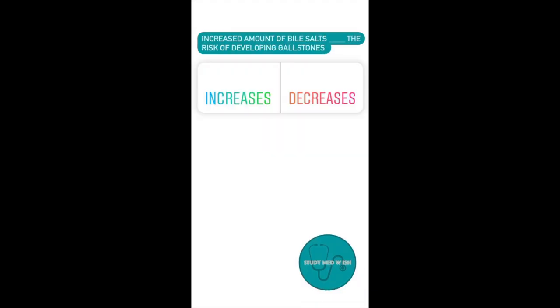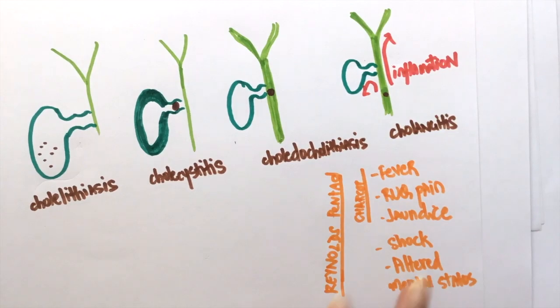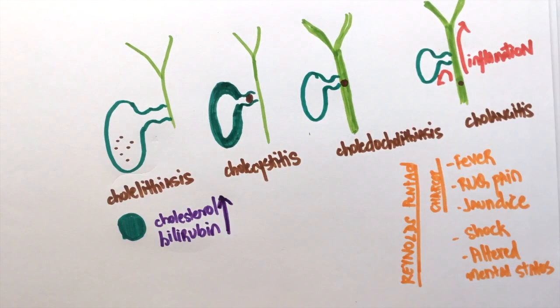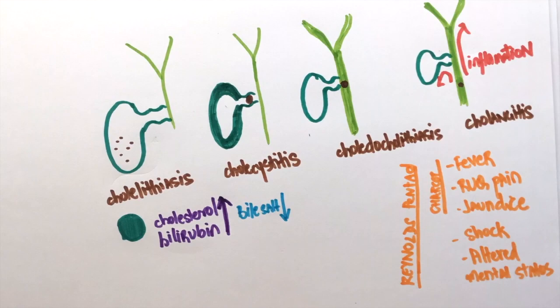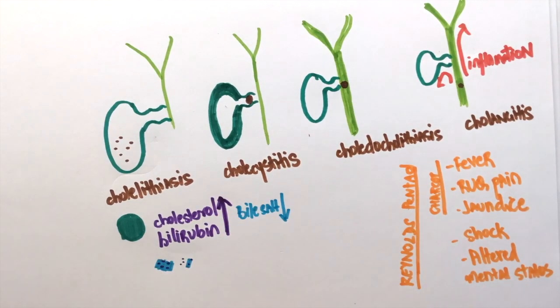Question number five. Increased amount of bile salts dash the risk of developing gallstones. Option A, increases. Option B, decreases. Increased cholesterol and bilirubin levels increase the chances of forming gallstones. Bile salts solubilize these two substances and hence decrease the chances of forming gallstones.